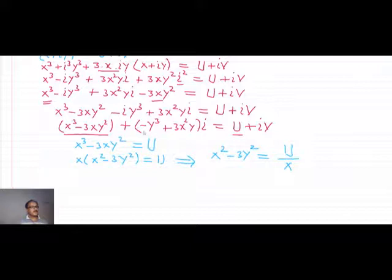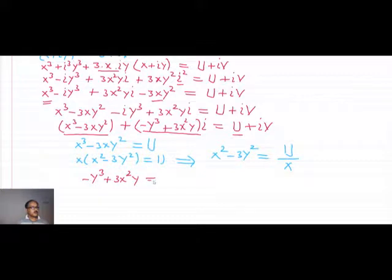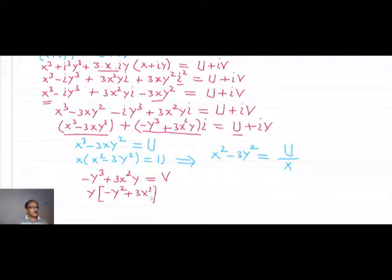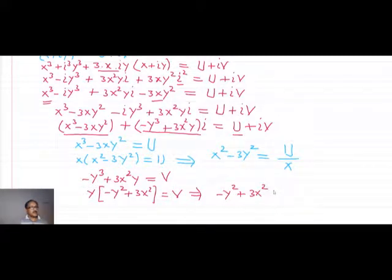Now we compare the imaginary parts. The imaginary part gives minus y³ plus 3x²y equals v. Taking y common: y(minus y² plus 3x²) = v, or equivalently minus y² plus 3x² = v/y.